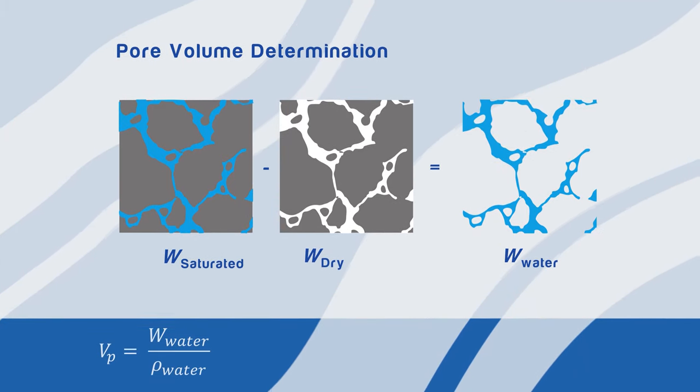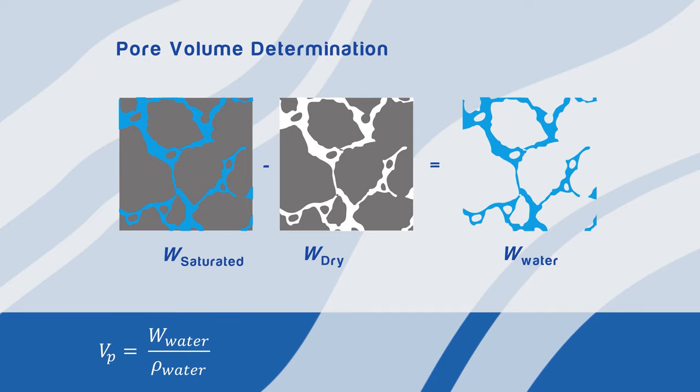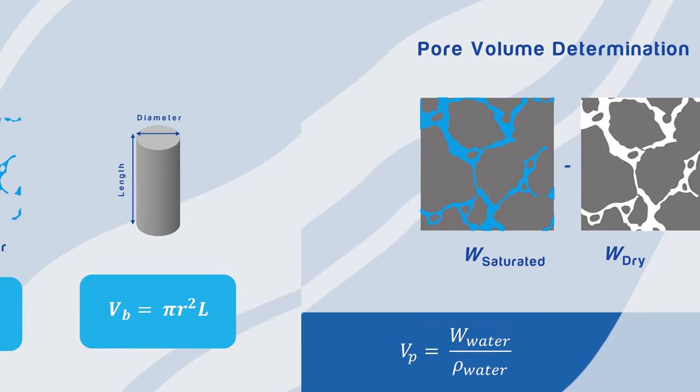To obtain the pore volume, we need to divide the weight of the water in the pore spaces by the density of water, since water is filling all the connected pore spaces.